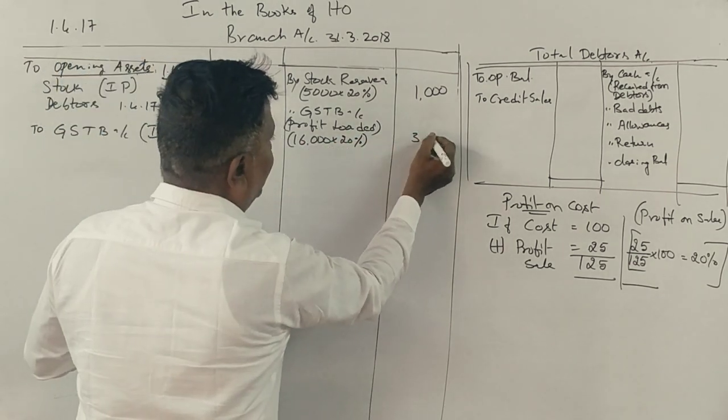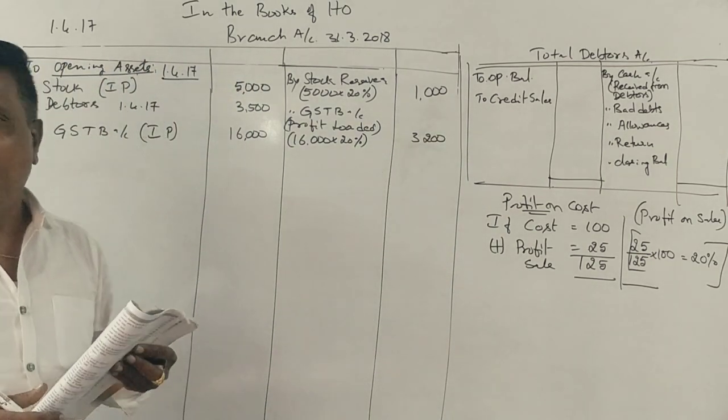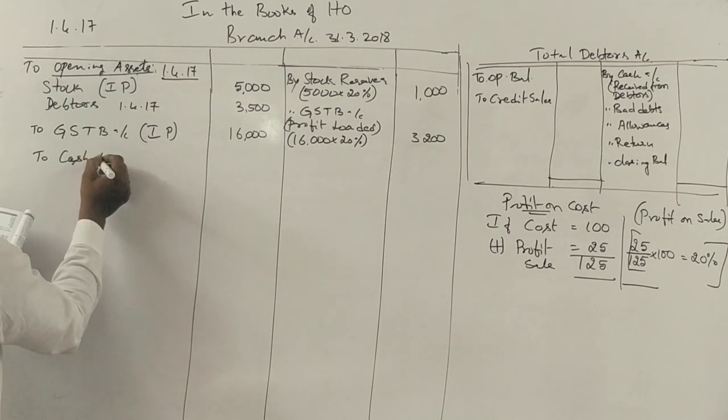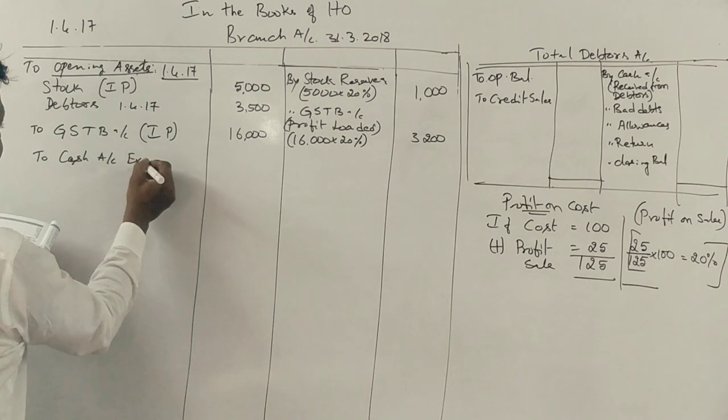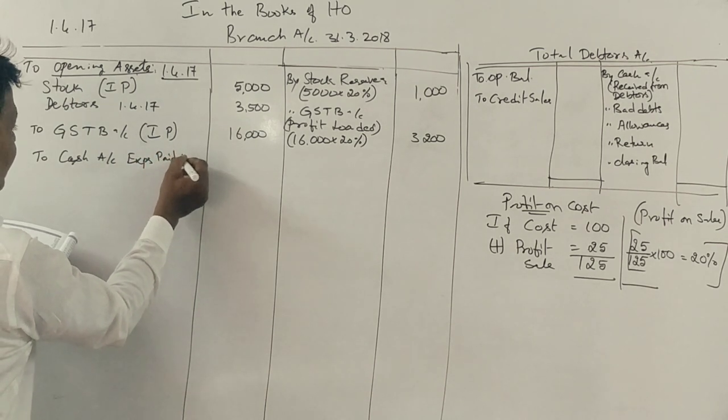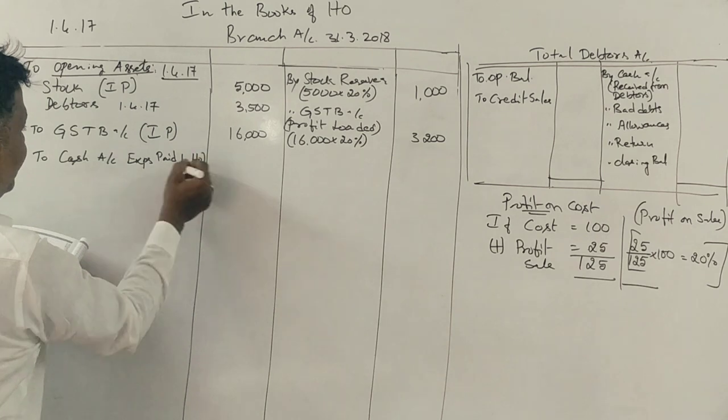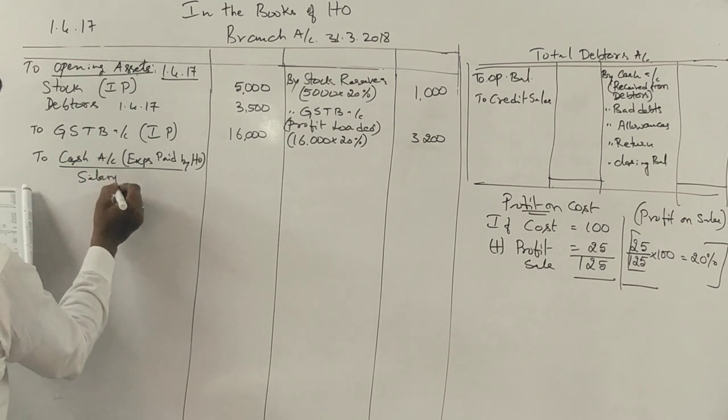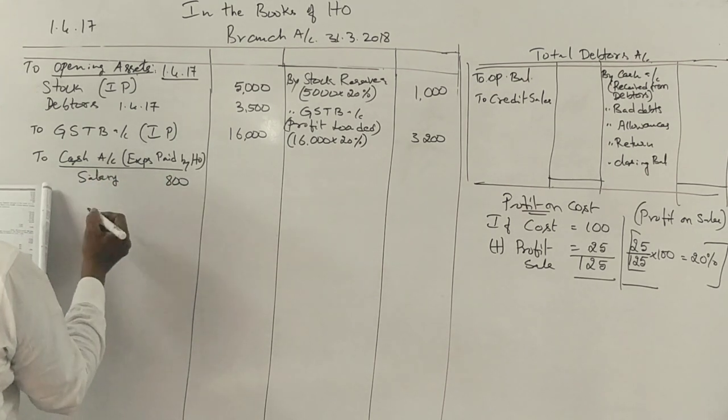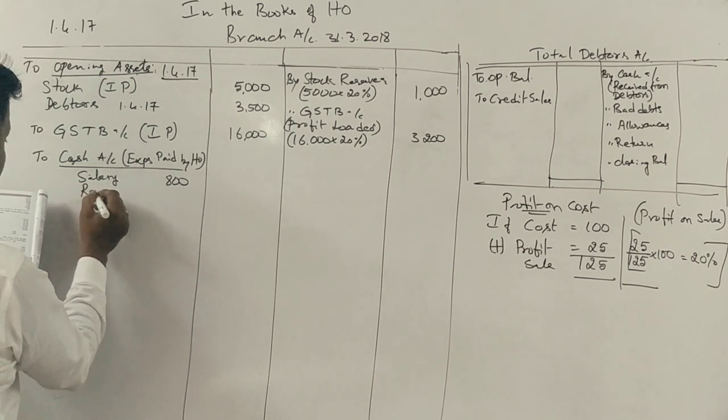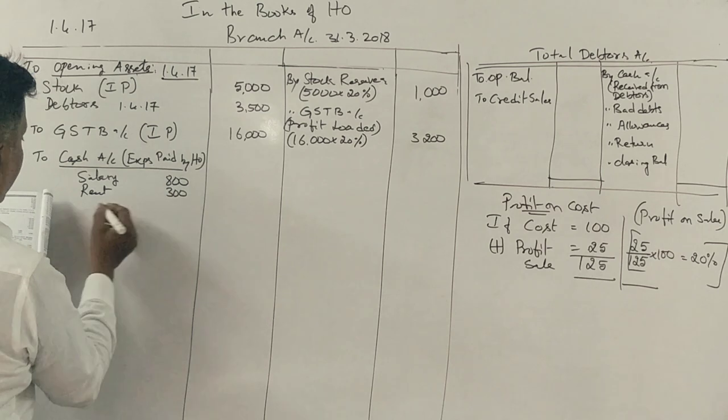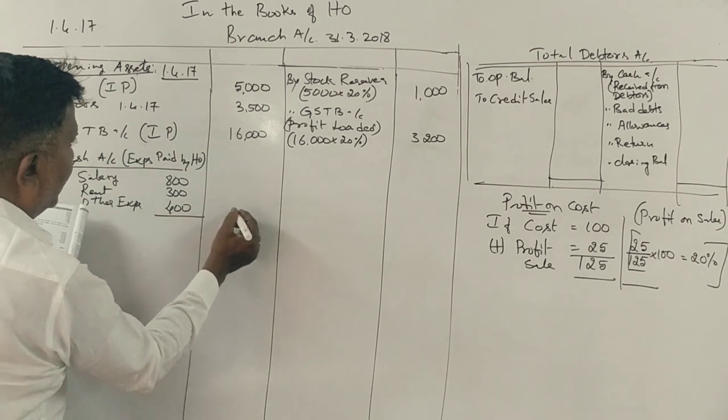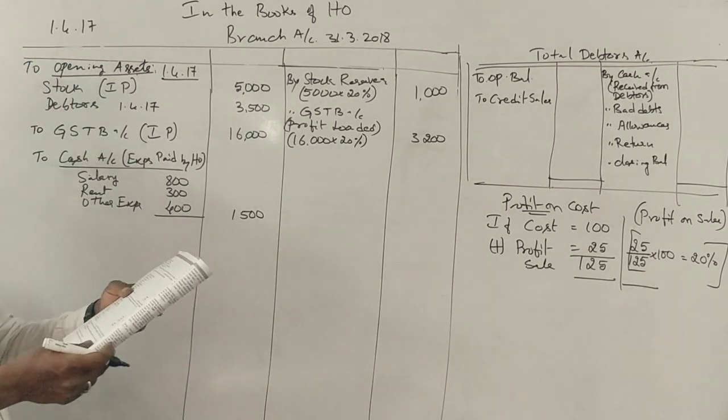Next, to cash account, expenses paid by head office: salary 800 rupees, rent 300 rupees, other expenses 400 rupees, total 1,500 rupees. Correct.